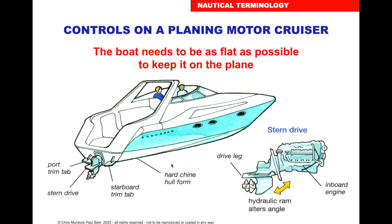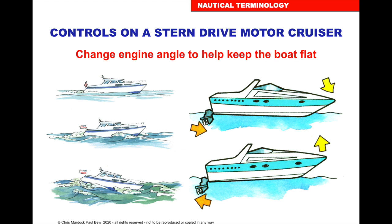The controls on a planing powerboat include the engine with a propeller that can move up and down - an inboard engine with a hydraulic ram to adjust the angle. There are also small boards at the back called trim tabs to stabilize the boat sideways and fore-and-aft. Moving the propeller forward brings the bow down; moving it aft brings the bow up. As you go along you can adjust the trim of the boat by moving the propeller up and down on the leg.